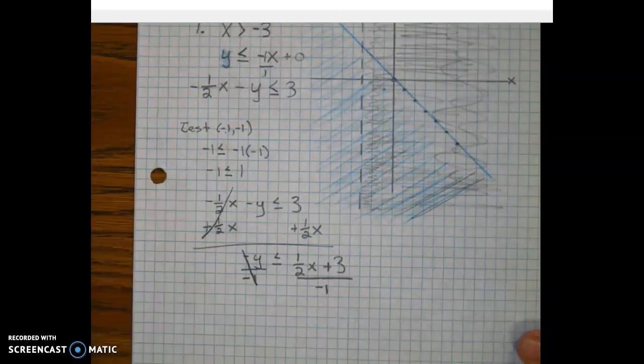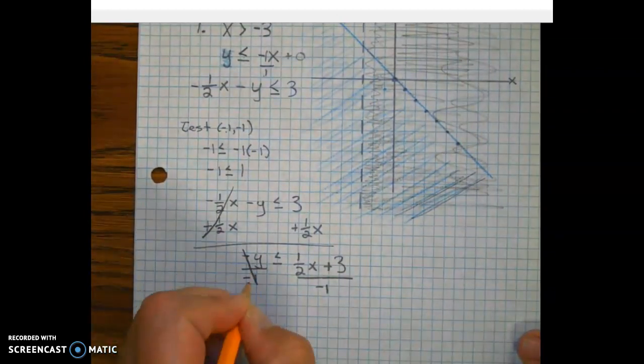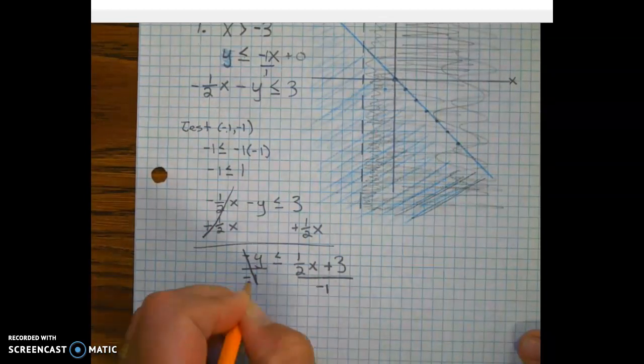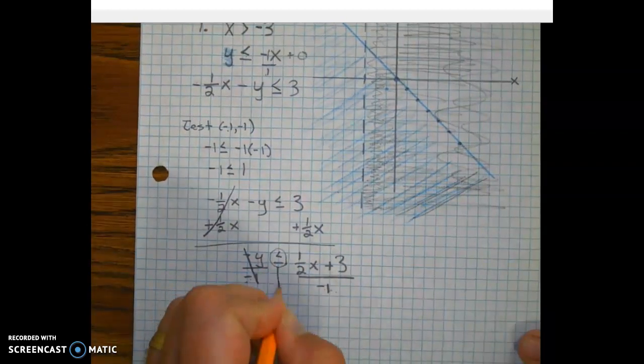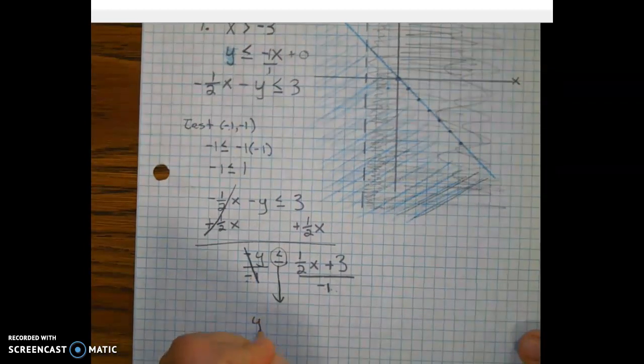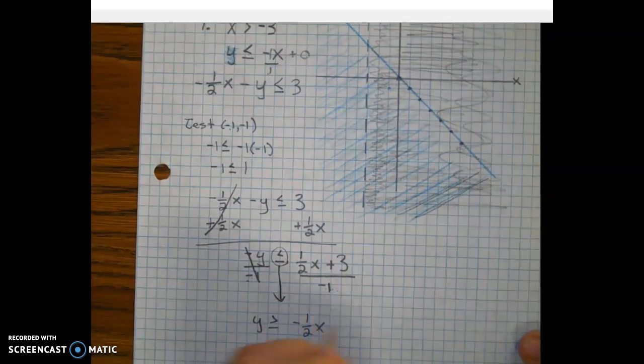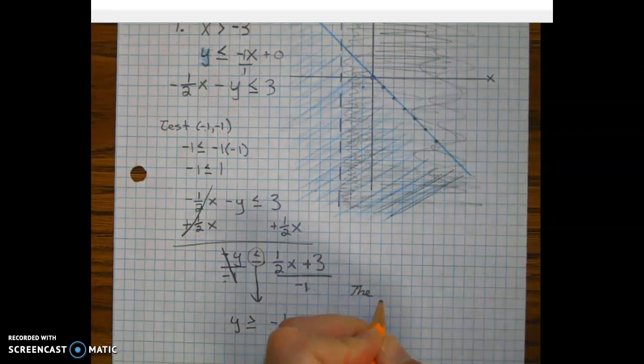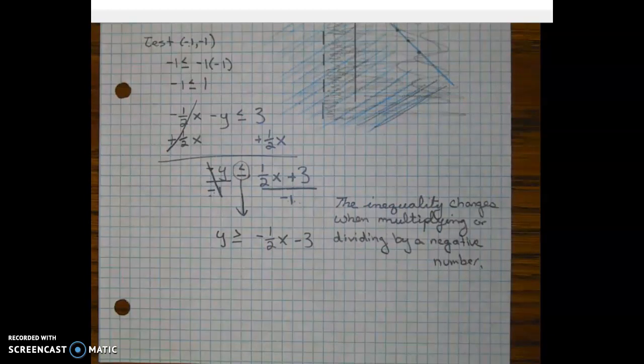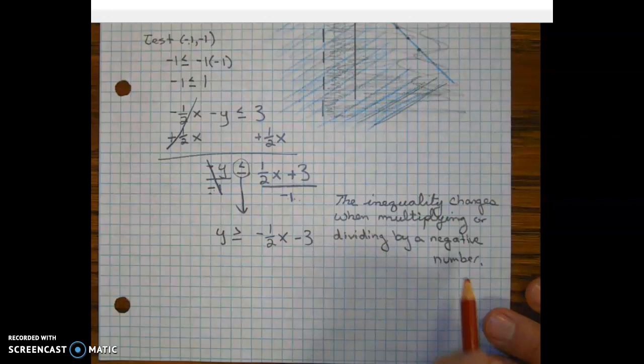Recall in the last video, when you divide by a negative 1 or a negative number, or if you multiply by a negative number, the inequality is going to switch. So we're going to have y is greater than or equal to negative 1/2x minus 3. I paused the video so I could write that down. You should do the same thing at this point, this little rule right here, unless you know it by heart.